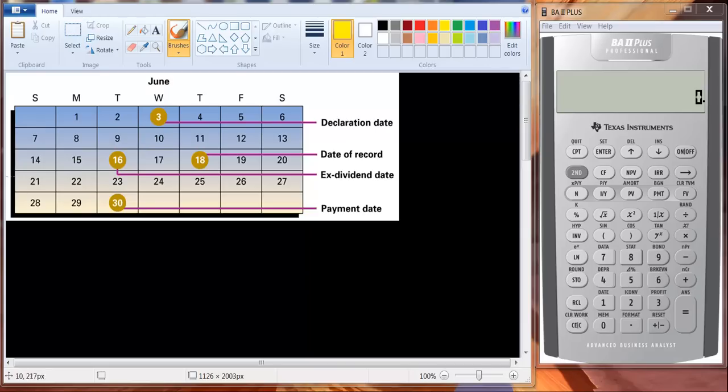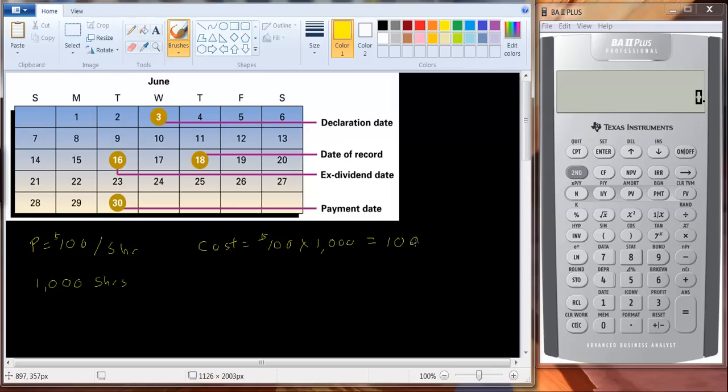For example, let's say that we buy stock and the price of the stock is $100 per share. And let's say we buy 1,000 shares of the stock. So we're buying, right, so the cost is going to be equal to $100 times 1,000 shares, or you're buying $100,000 in stock. When you're buying the stock, if you buy it before the ex-dividend date, you're essentially getting the dividend.